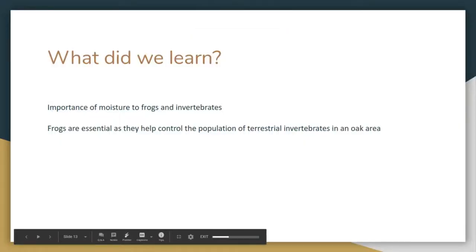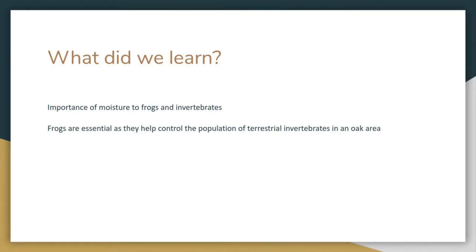What did we learn? From doing this research project, we learned that frogs and invertebrates are important parts of ecosystems, as they are a source of nutrients and carry nutrients throughout different areas themselves. What we learned from our data and results is that water is also an important part of an ecosystem, as it could greatly alter the composition of an ecosystem.